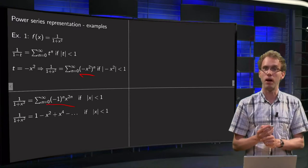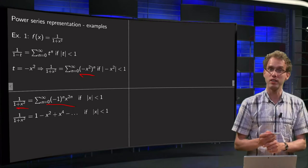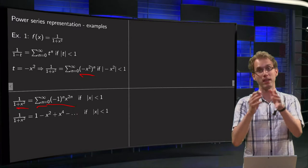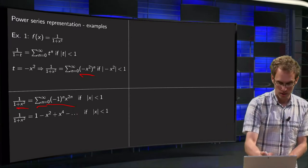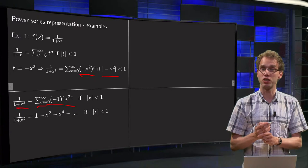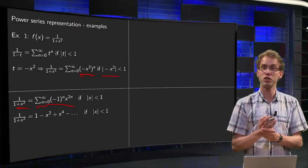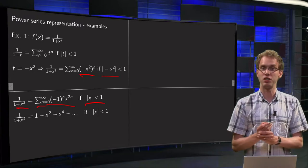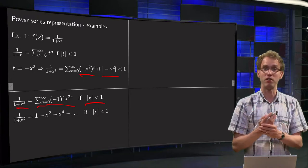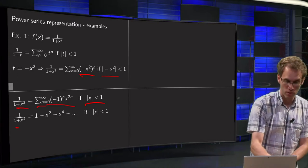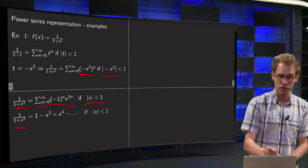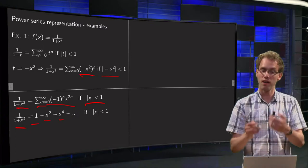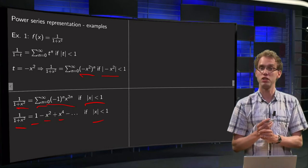So we have 1 over 1 plus x squared equals the sum from n equals 0 to infinity of minus 1 to the power n times x to the power 2n. This holds if the absolute value of minus x squared is smaller than 1, so if the absolute value of x squared is smaller than 1, and taking square roots on both sides, that means if the absolute value of x is smaller than 1. Writing out the first terms: 1 minus x squared plus x to the power 4, etc., for absolute value of x less than 1.